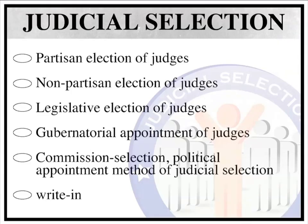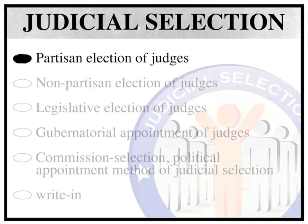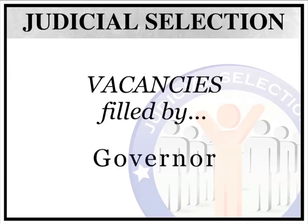Judges in Ohio are selected in partisan primary elections and then nonpartisan general elections. All judicial elections are held in even-numbered years, except those for the municipal courts, which are held in odd-numbered years. Midterm vacancies are filled by gubernatorial appointment.